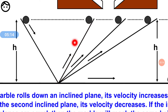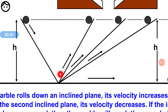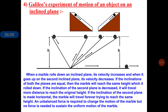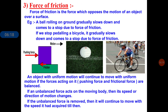Then they decreased the inclination of the second plane and rolled the ball again. What happened was that the ball reached the same height as on the first inclined plane, even though the inclination was less. Then they increased the inclination even more. They observed that the ball moved until the height of the inclination plane matched the original height. This led Galileo to say that a force is required to change the motion of a marble, and if no force acts, the marble continues in uniform motion.